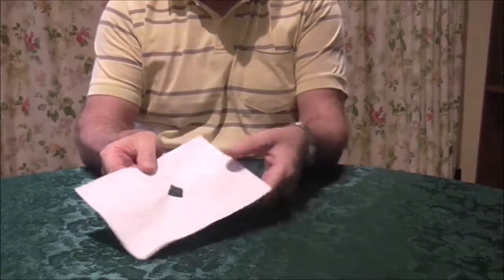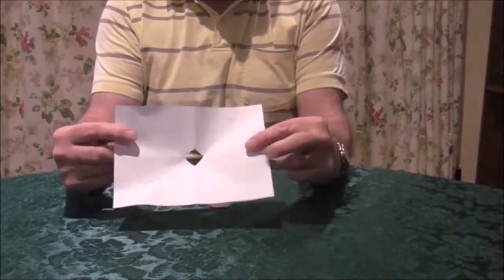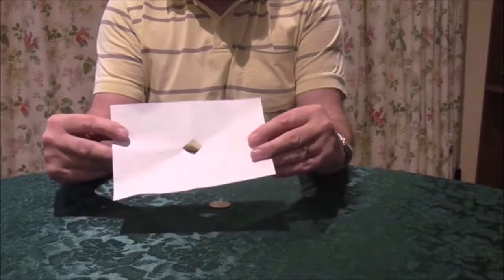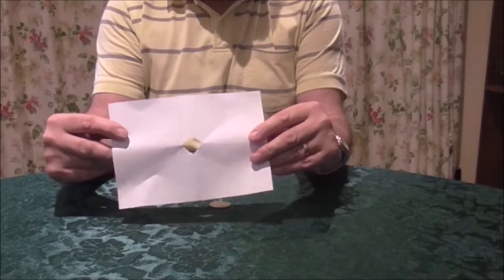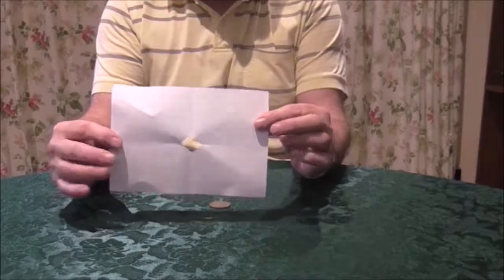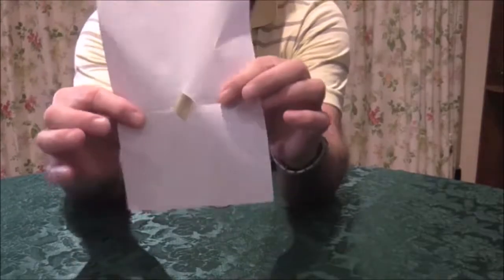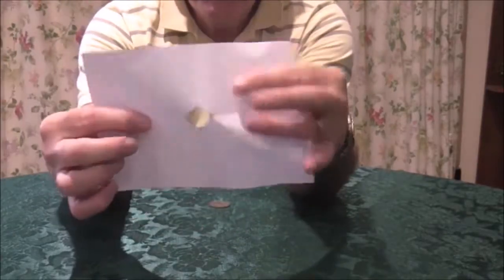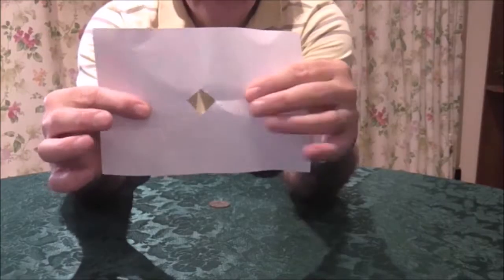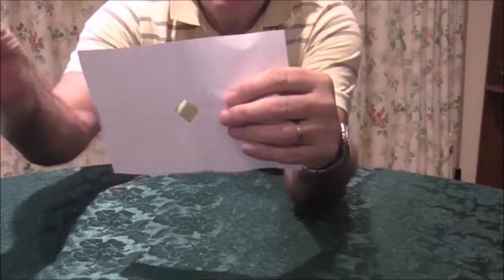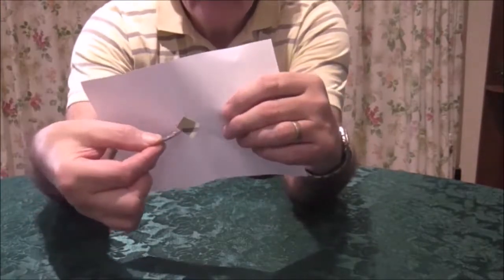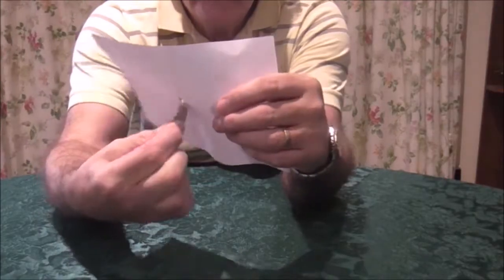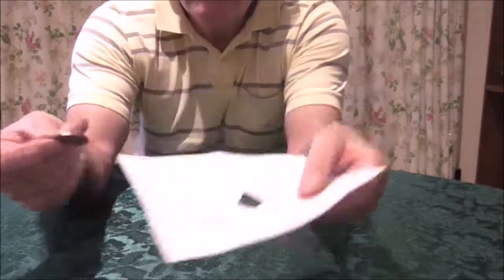And you can open it up and show that the hole is still smaller than the coin. But there are no tears this way. And there are no tears that way. And the coin of course still won't go through, because the coin is still much bigger than the hole.